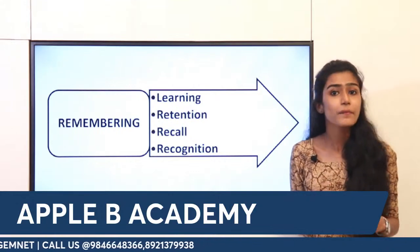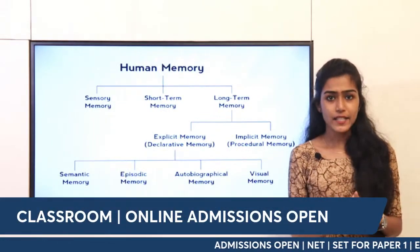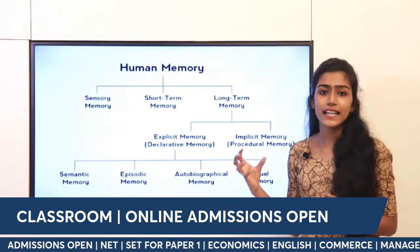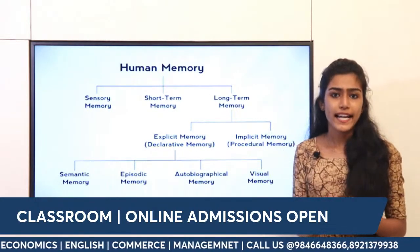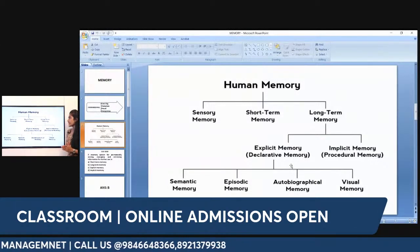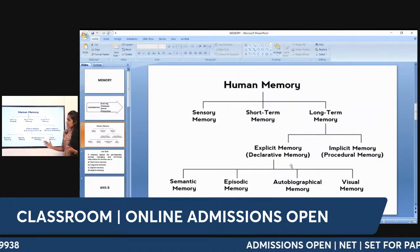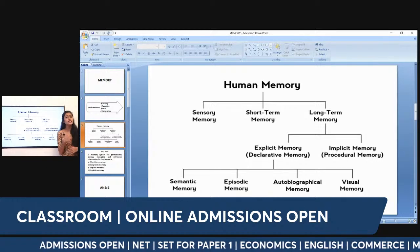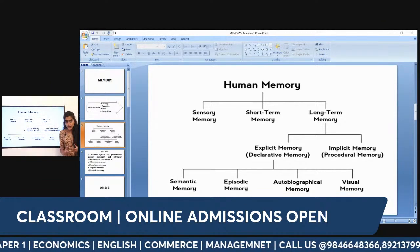So if you want to understand memory and remembering, we have four key components: memory, remembering capacity, learning, retention, recall, and recognition. We will learn further about these different things.